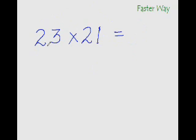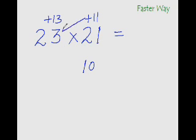What is 23 times 21? Again, we are taking the base as 10. 21 is plus 11 more than the base and 23 is plus 13 more than the base. 11 plus 23 is 34. I have used the jumping 10 technique. Now, one more place to go.